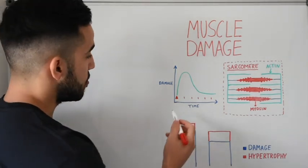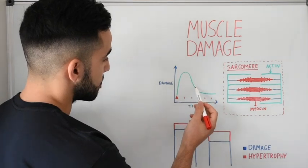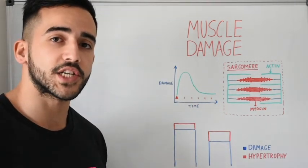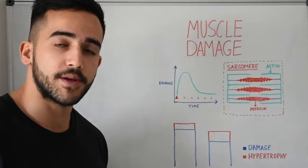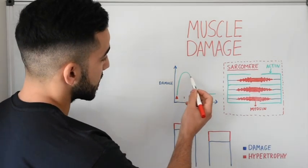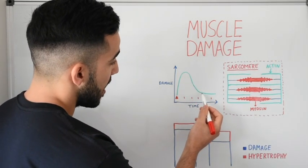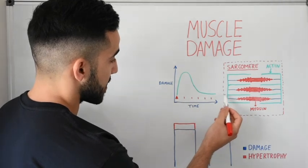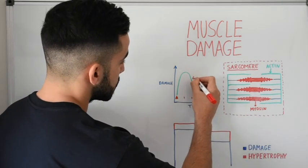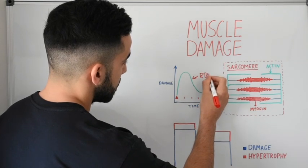The more times you perform a certain movement or exercise, the less damaging it gets. So if we start a new program, for the first few weeks we experience quite a large degree of muscle damage. After the second and third week, muscle damage tends to drop and then flatten out, again due to the repeated bout effect.